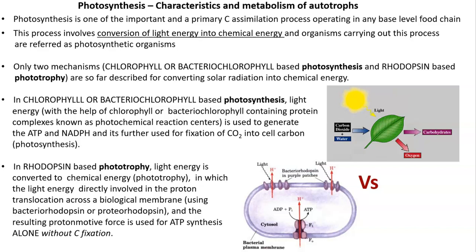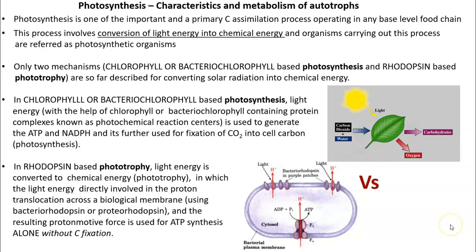In this lecture, we are going to see points related to photosynthesis. Photosynthesis is one of the important and primary carbon assimilation processes operating on Earth, mainly at the base level of the food chain. Photosynthesis is a process in which light energy is converted into chemical energy, and the organisms involved in this process are technically referred to as photosynthetic organisms.